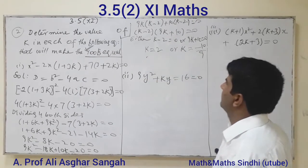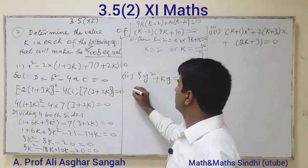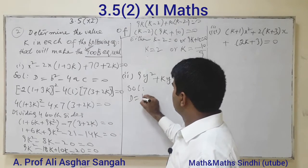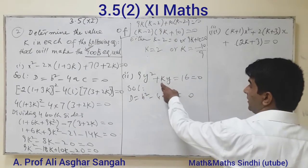Either K minus 2 equals zero or 9K plus 10 equals zero. So K equals 2, or K equals minus 10 divided by 9. These are the two values of K.